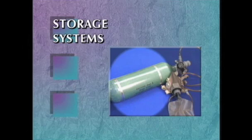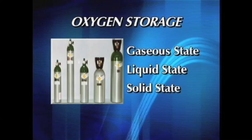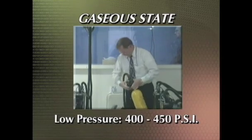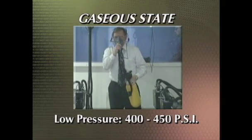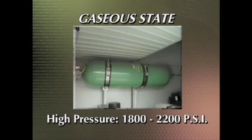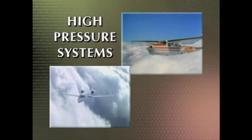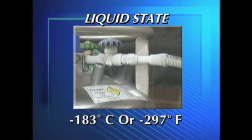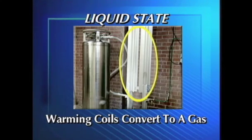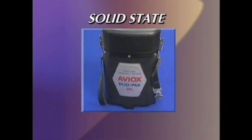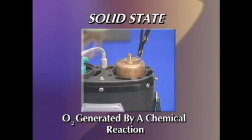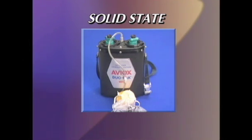There are three ways to store oxygen: gaseous state, liquid state, and solid state. Gaseous oxygen can be stored in low pressure containers at 400 to 450 pounds per square inch, or in high pressure containers at 1,800 to 2,200 pounds per square inch. Primarily high pressure systems are used in both commercial and general aviation. Liquid oxygen is stored at extremely cold temperatures — minus 183 degrees Celsius or minus 297 degrees Fahrenheit — and converts to a gaseous state as it passes through warming coils. Oxygen can also be stored in solid state form, generated by a chemical reaction process, used in both general and commercial aviation.